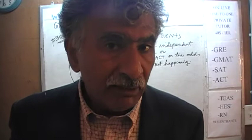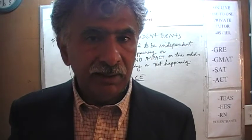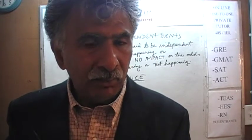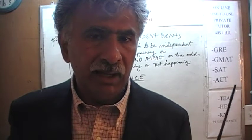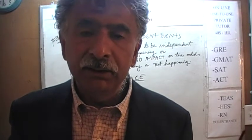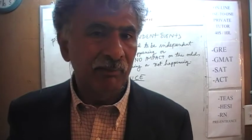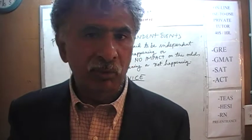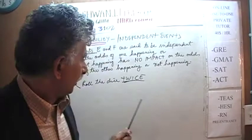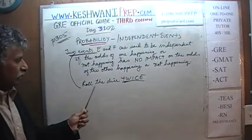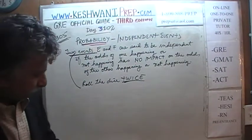Mutual independence is something different. Two events are said to be mutually independent if the odds of one happening has absolutely no impact on the odds of the other happening. Here, the two events are two distinct events — we are not talking about two events happening simultaneously. When we talk about two events here, we are talking about rolling the dice twice.